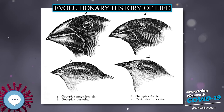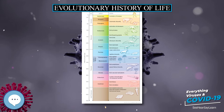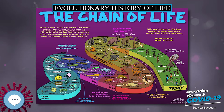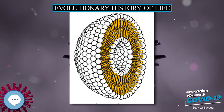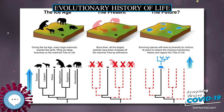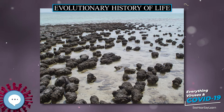The evolutionary history of life on Earth traces the processes by which living and fossil organisms evolved, from the earliest emergence of life to the present. Earth formed about 4.5 billion years ago and evidence suggests life emerged prior to 3.7 Ga. Although there is some evidence of life as early as 4.1 to 4.28 Ga, it remains controversial due to the possible non-biological formation of the purported fossils. The similarities among all known present-day species indicate that they have diverged through the process of evolution from a common ancestor.